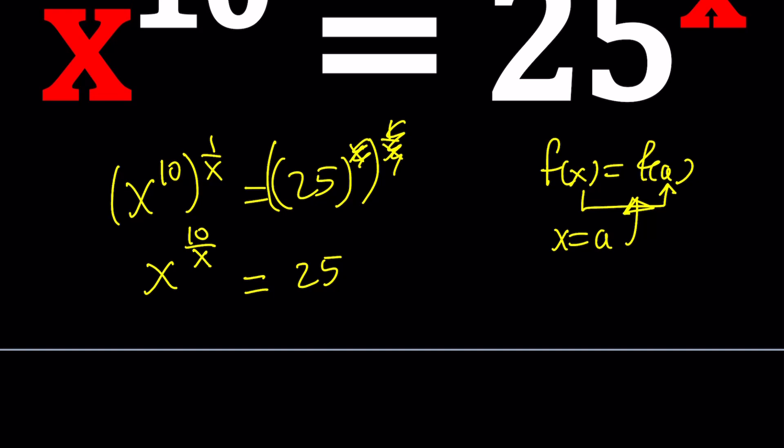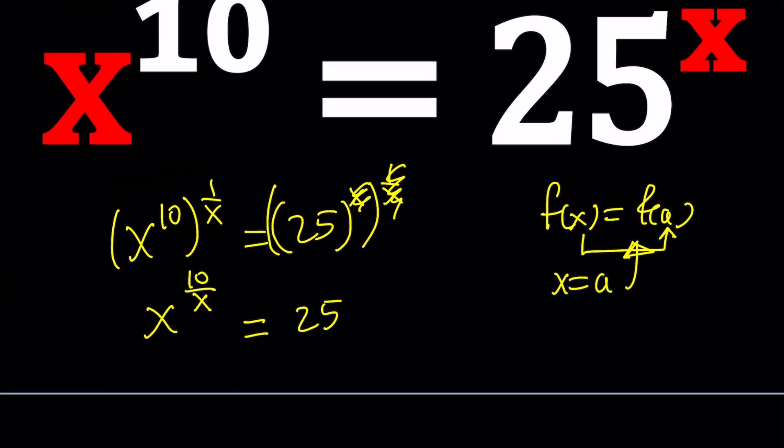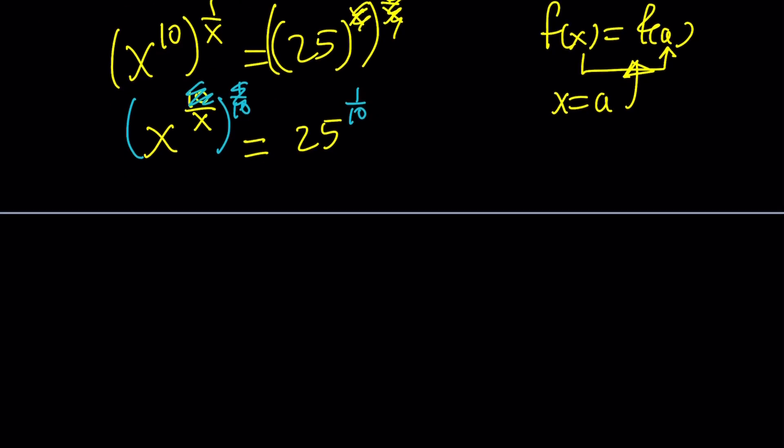Now, let's go ahead and simplify this a little bit more. Notice that 25 is 5 squared. But guess what? I want to get rid of the 10 as well, so let's go ahead and raise both sides to the power 1 over 10. And the 10 cancels out, leaving us with x to the power 1 over x, which is nice.